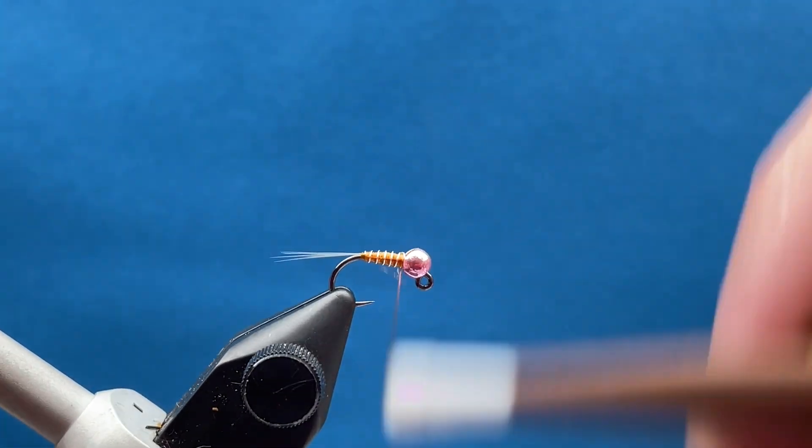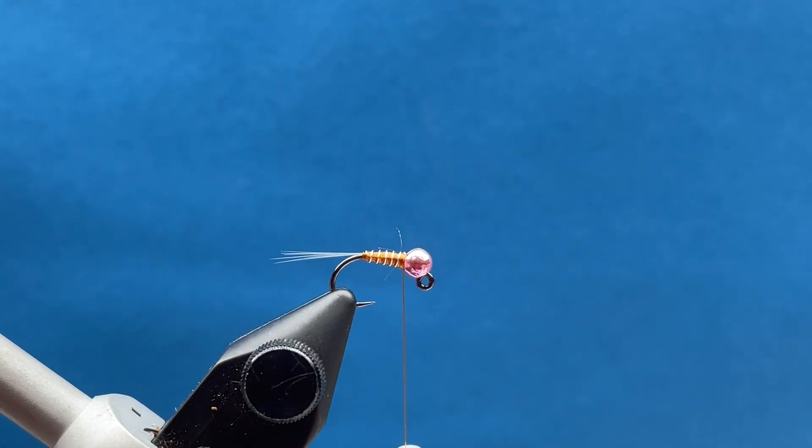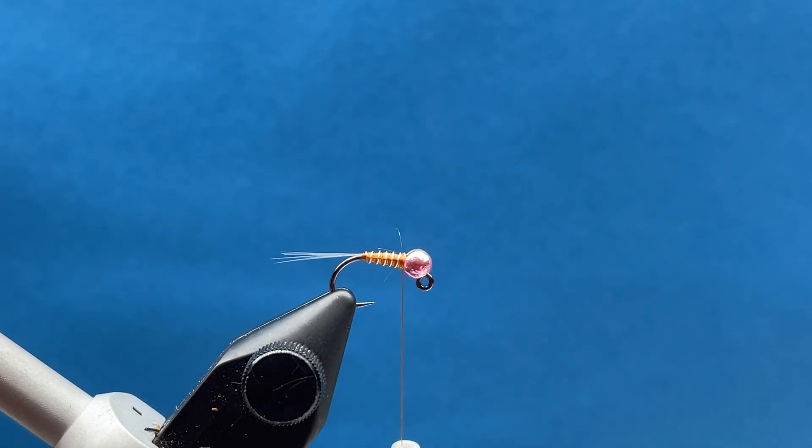Then wrap down over it. That just helps secure that wire in a little bit better and makes it so that wire won't pull out after a few fish have hit it. Now we're going to take a little pinch of Arizona Diamond Dub here.